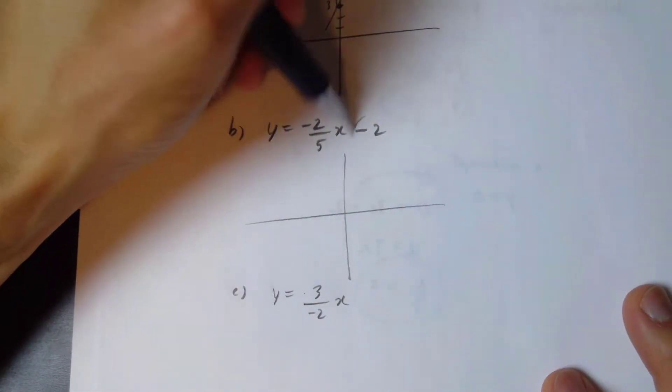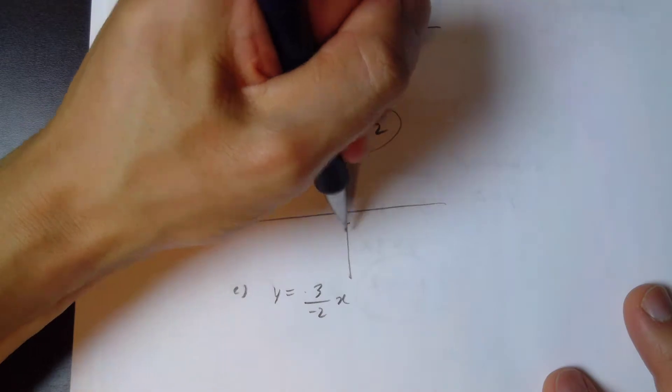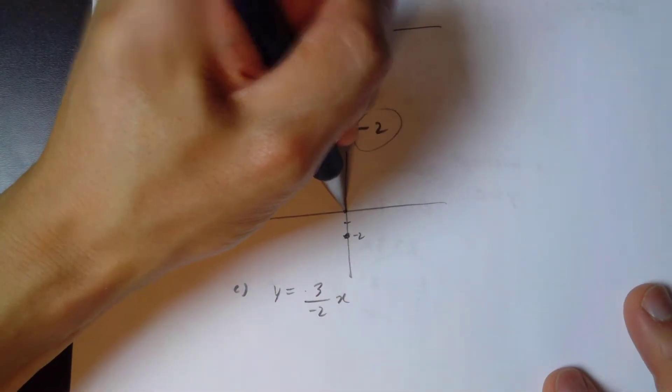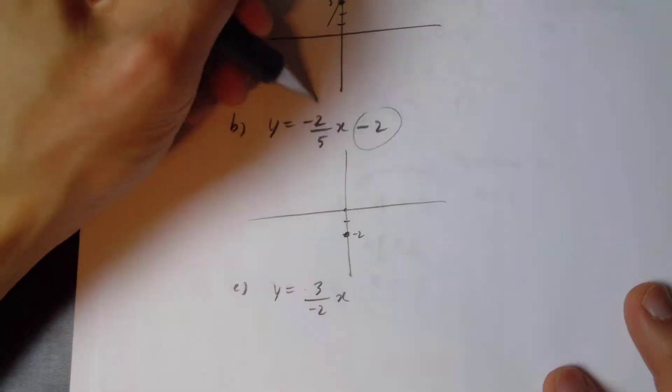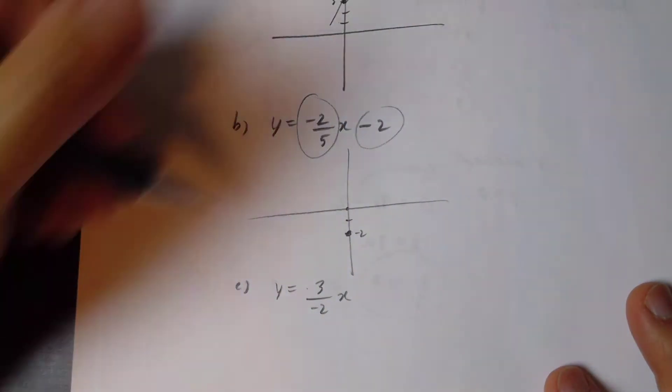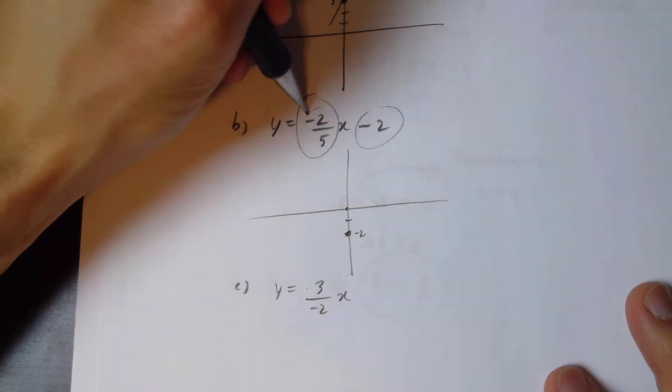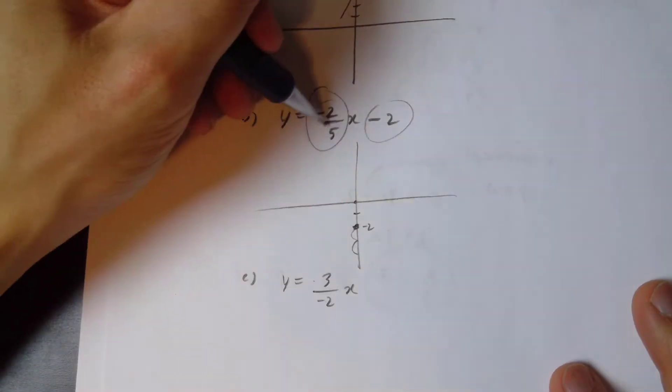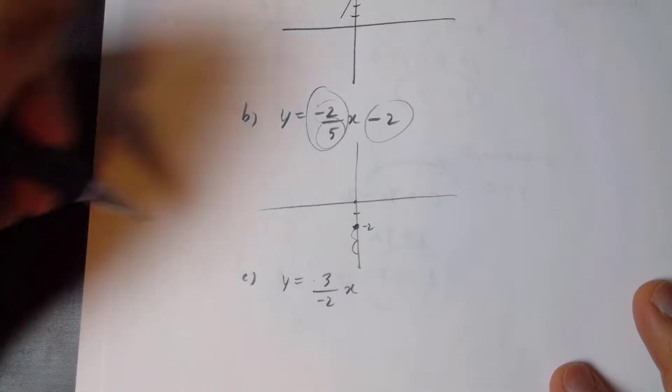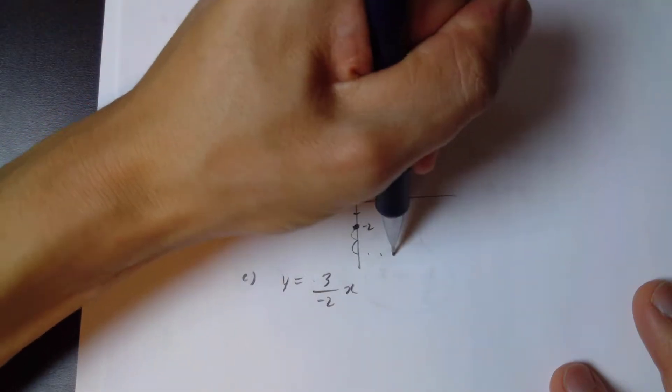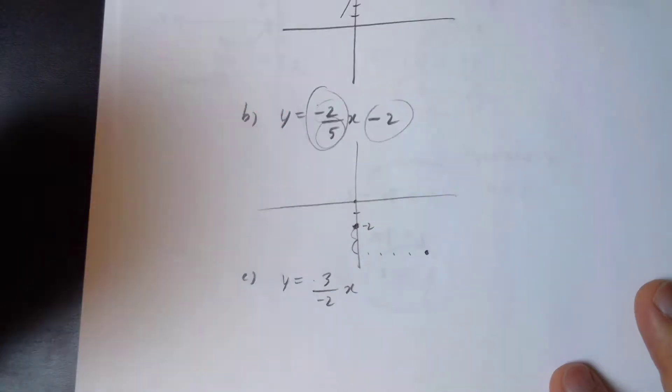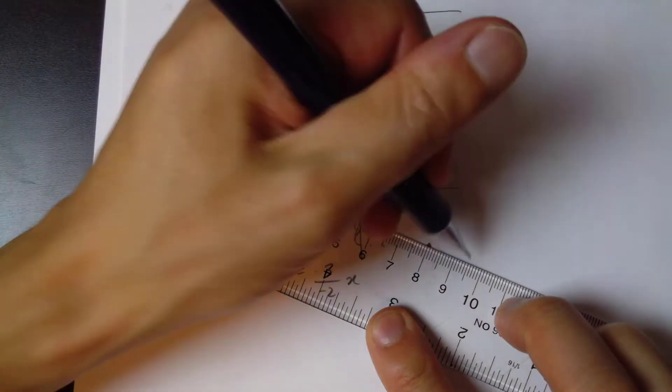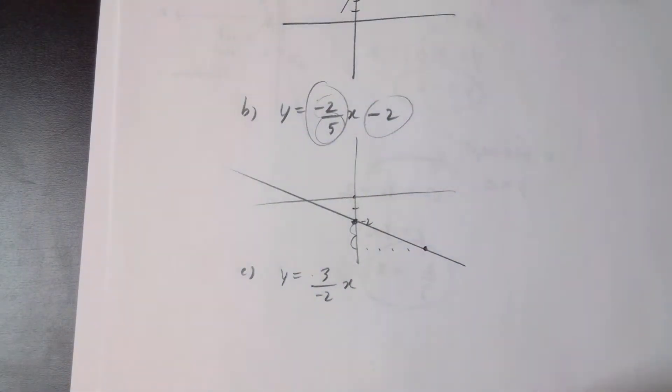Again, begin with the intercept of negative two, which means you go down to, this is negative two, zero comma zero is the center here. Now we're going to focus on the slope. The rise is negative two, which means you go down two, and the run is going to be positive five, which means you go five to the right. So this is one, two, three, four, five, and there's a dot over there. Just make sure you only put two dots and you just have to connect them. This is your nice line for part b.